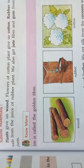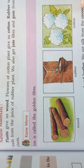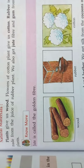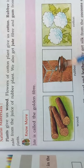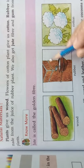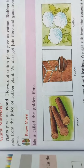The material we are getting from the plant - the flowers of the cotton plant - we are using that for making cloths. And even the juice of a rubber plant is used to make rubber. And also we get jute, fiber and gum from plants. Gum we get from the plants. So these are all natural materials.